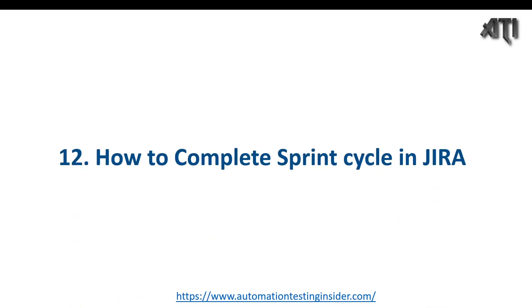Hello everyone, welcome back to another video of Automation Test Insider. This is part 12 of the Jira series. Today we are going to talk about how we can complete the sprint cycle in Jira. Generally, once our release process is over, once our sprint cycle is done, or once we deploy the milestone into production, we have to officially close the sprint cycle in Jira so that we can start working on the next milestone or sprint cycle.